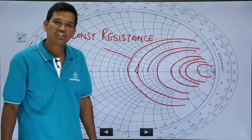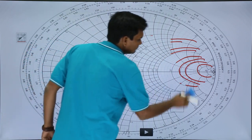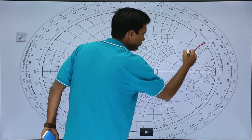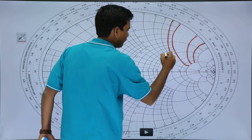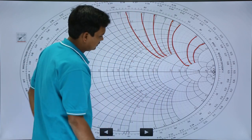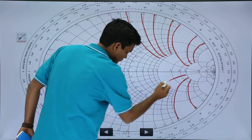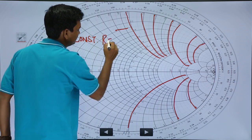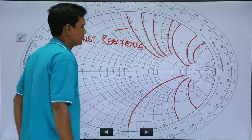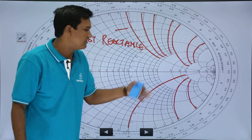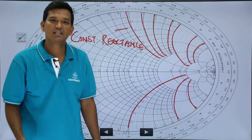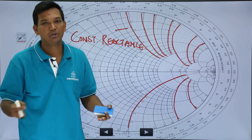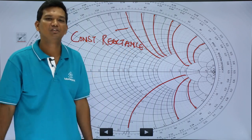What is a constant reactance circle? If you observe, there are also circles here and also in the lower portion — these circles are called constant reactance circles. So the Smith Chart has two things: constant resistance circles and constant reactance circles. Graphically it is very easy to solve transmission line problems, because solving them numerically or theoretically is very difficult.